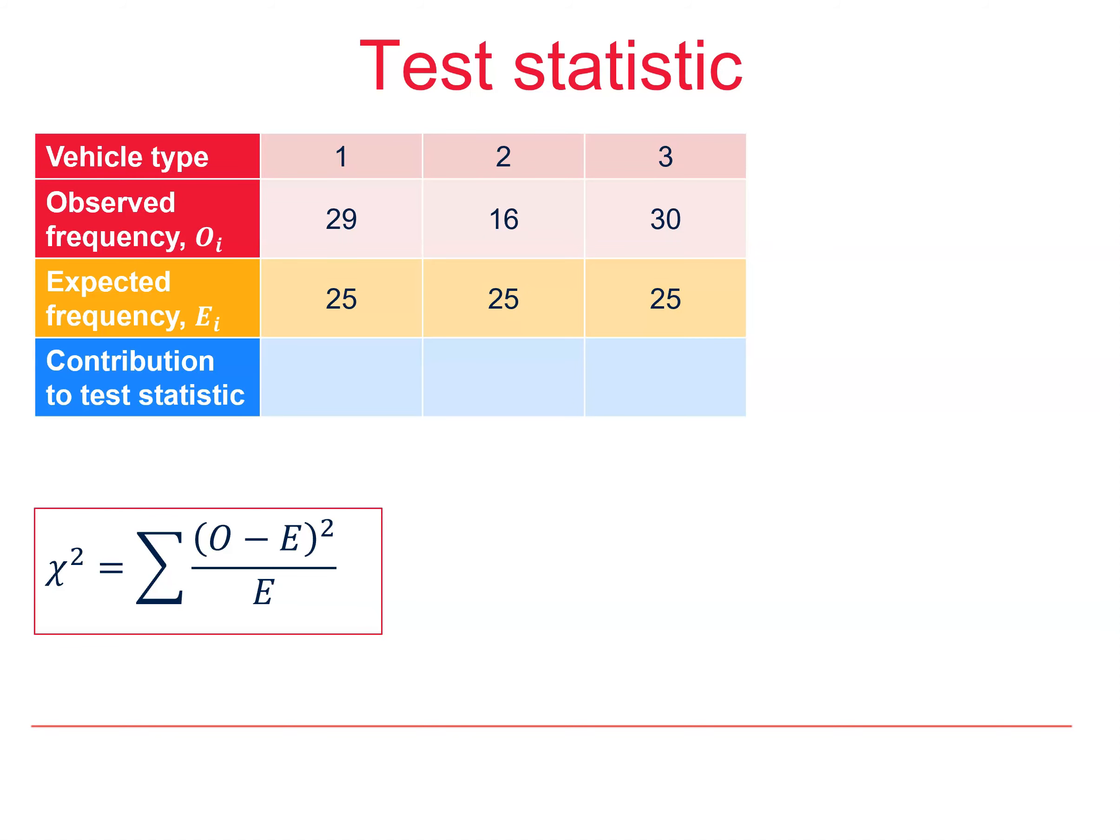Then we work out the contributions to the test statistic in the usual way. So for the first cell, that's 29 minus 25, all squared, divided by the expected value, which is 25. So that's 16 over 25, which is 0.64. And so on. We add them all up to get x squared is equal to 4.88.